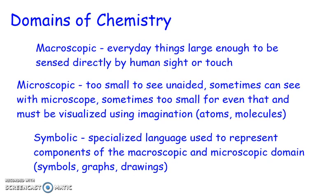There are three domains of chemistry: the macroscopic, the microscopic, and the symbolic. The macroscopic domain consists of everyday things that are large enough for humans to sense them directly by either sight or touch. The microscopic domain consists of things that are too small to be seen unaided. Sometimes with a microscope we can see things that are part of that microscopic domain, but often in chemistry we're looking at things like atoms and molecules that are too small to be seen even with a microscope.